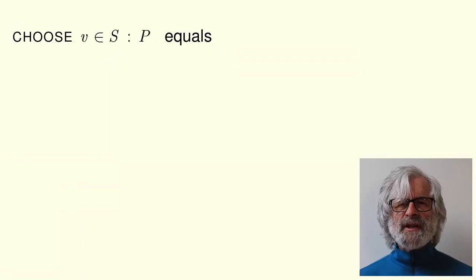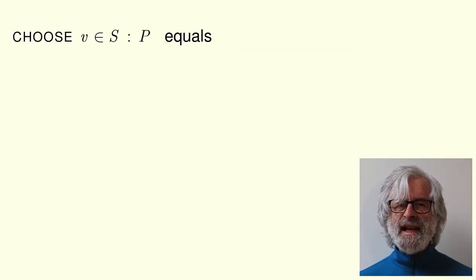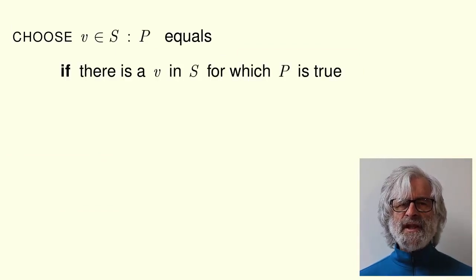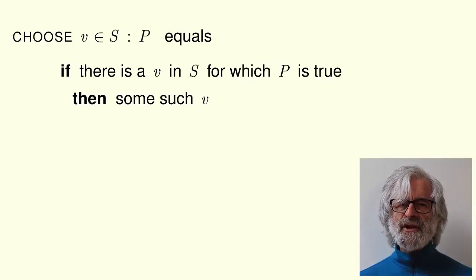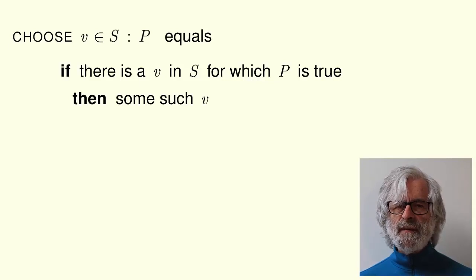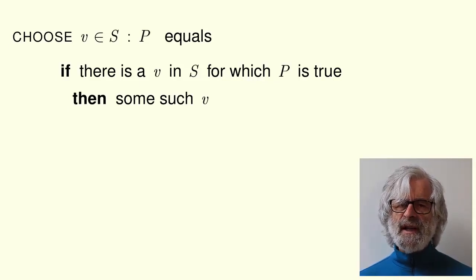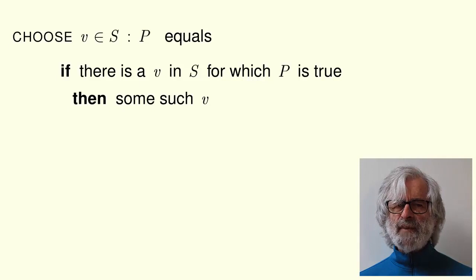In general, the expression choose variable V in expression S colon formula P equals, if there is at least one value V in the set S for which formula P is true, then the expression equals some such V. If there is more than one, then the semantics of TLA+ don't specify which one.